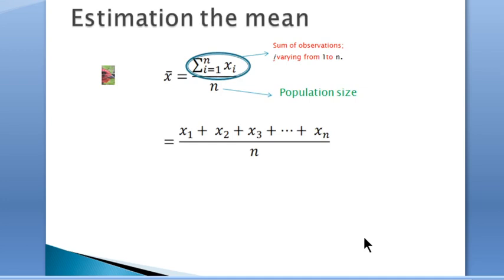How are they estimated? The mean is estimated by the sum of all the observations divided by the population size according to this formula where i denotes the observation and varies from 1 to n.